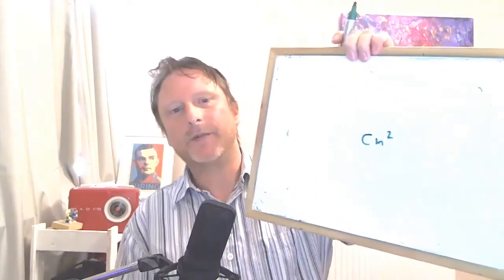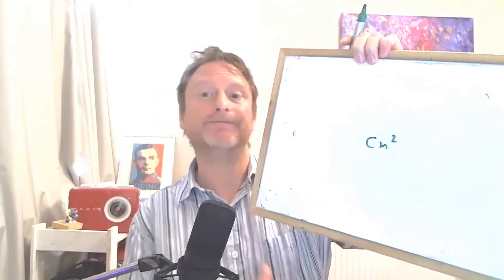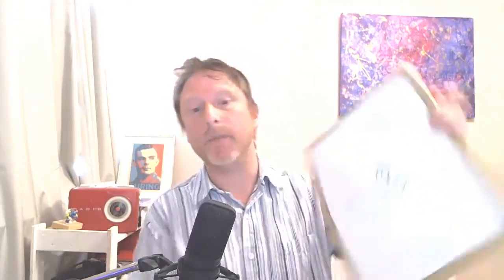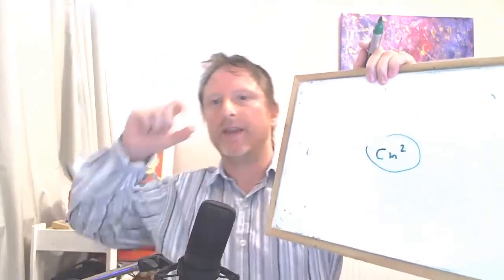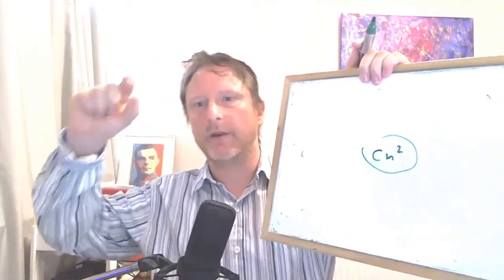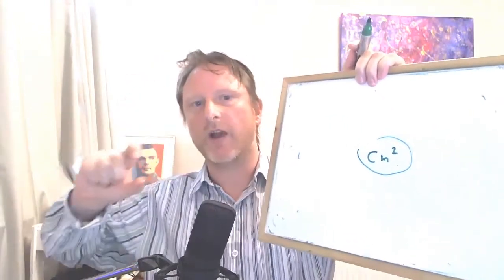What does cm² mean? It basically means square centimeters — squares whose side is one centimeter. Because they're squared, the base is the same as the height, so cm² is actually a number of these little squares that will cover your rectangle.